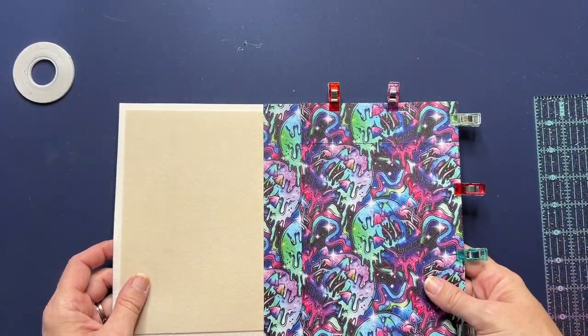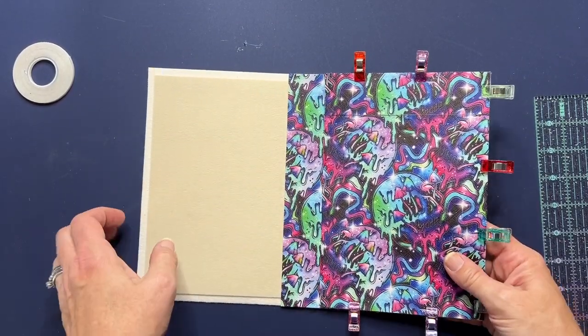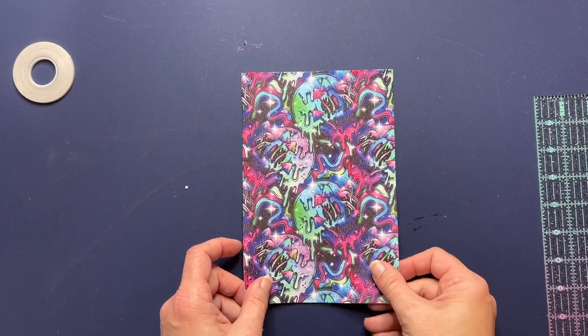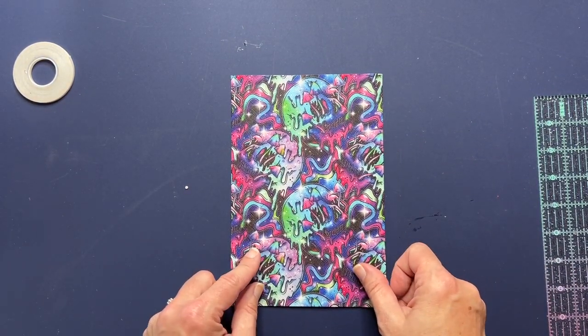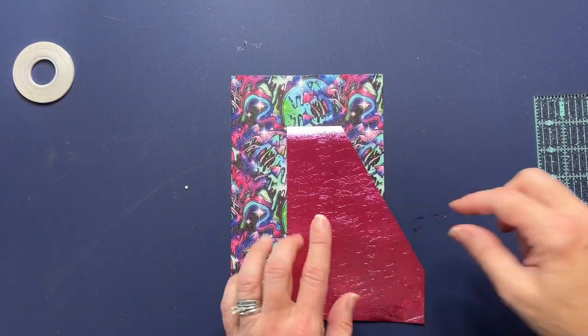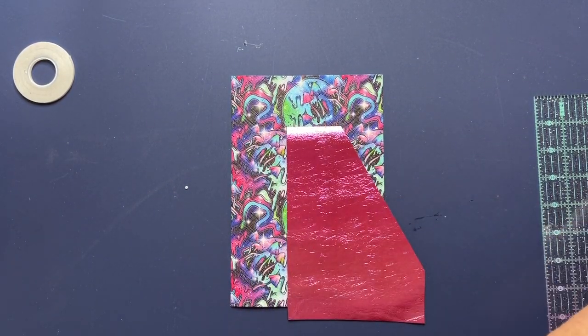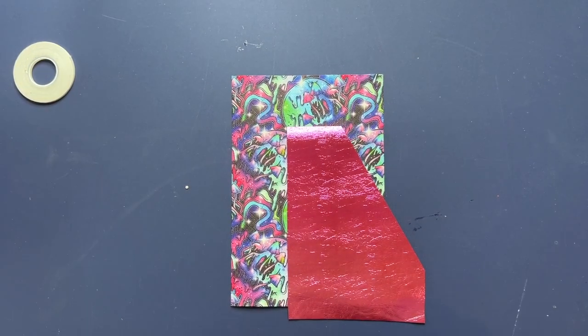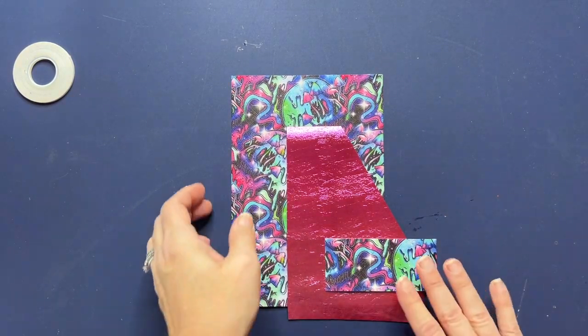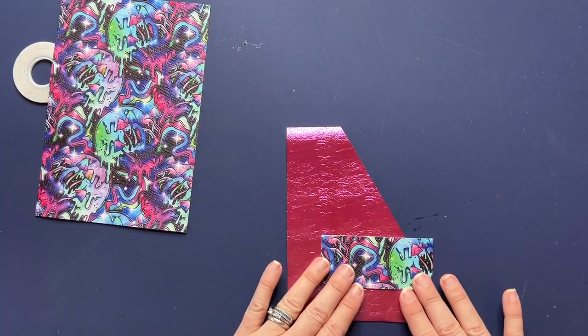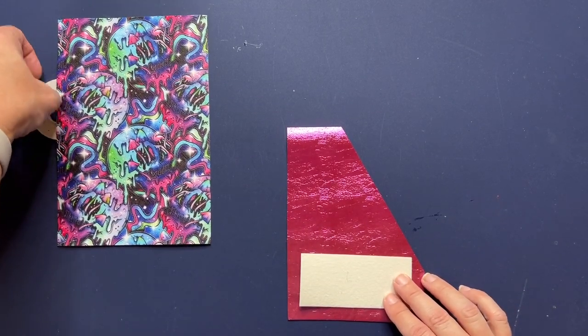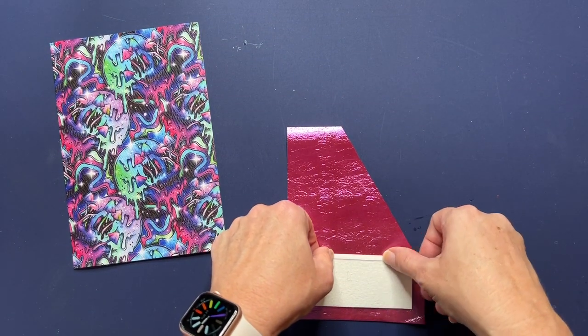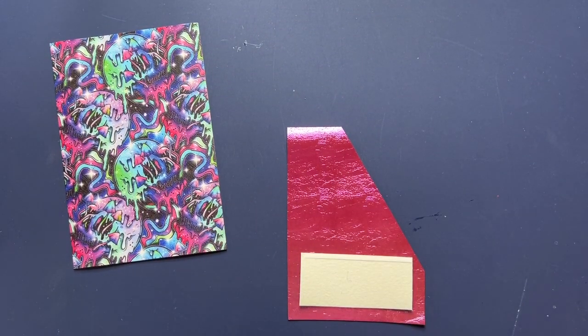Next we are going to work on our other panel here with the two pockets. So setting that to the side, you're going to take your other lining panel, laying it down right side up. You're going to need your angled pocket and you're going to need your card slot. Okay, so first working with your angled pocket and your card slot, I'm just going to add a piece of double sided tape just to help hold it in place here along the bottom edge.